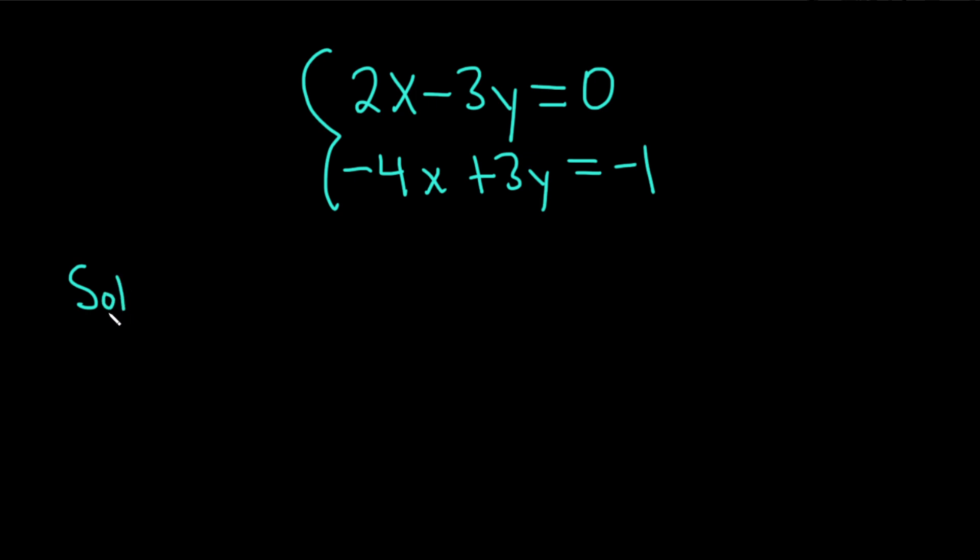Solution. Let's try to do this by using the addition, or also known as the elimination method. Basically the idea is we want to add or subtract the equations in order to eliminate variables, and we can see right away that if we add these two equations, negative 3y plus 3y is going to give us 0.